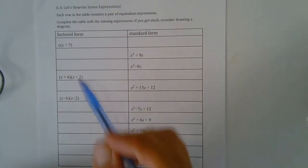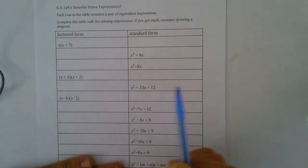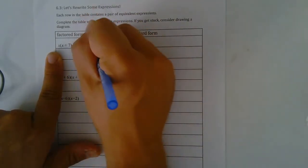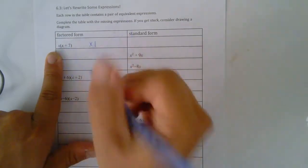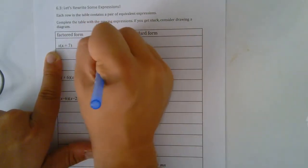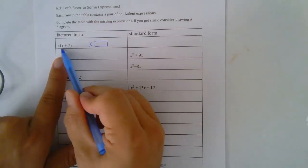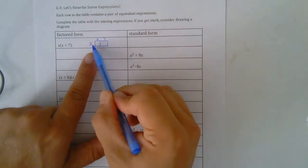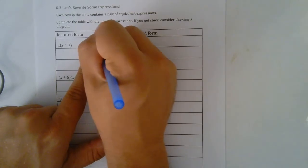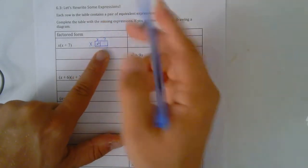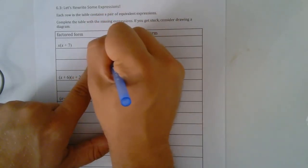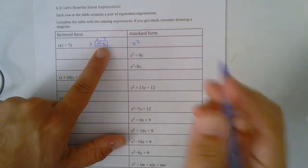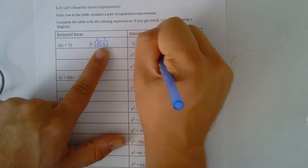For our last part we're going to move from factored form to standard form. On the outside of the rectangle, for my length I have one piece, and for my width I have two pieces: x and 7. So to multiply that, x times x is x squared, and 7 times x is 7x. So inside the rectangle I have x squared and then plus 7x.